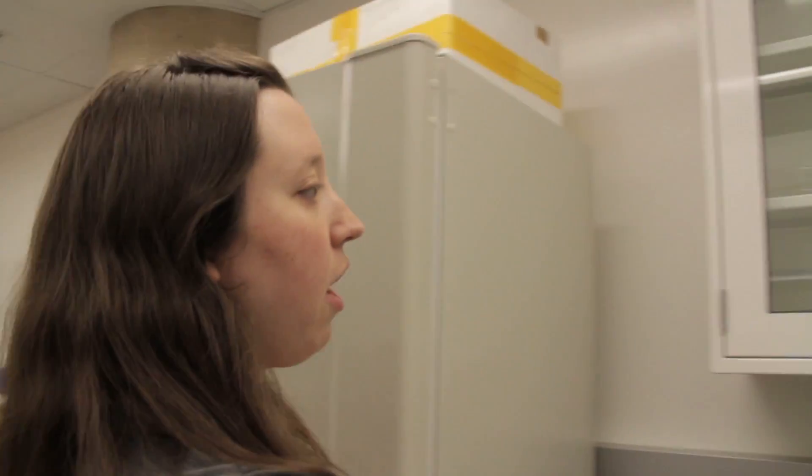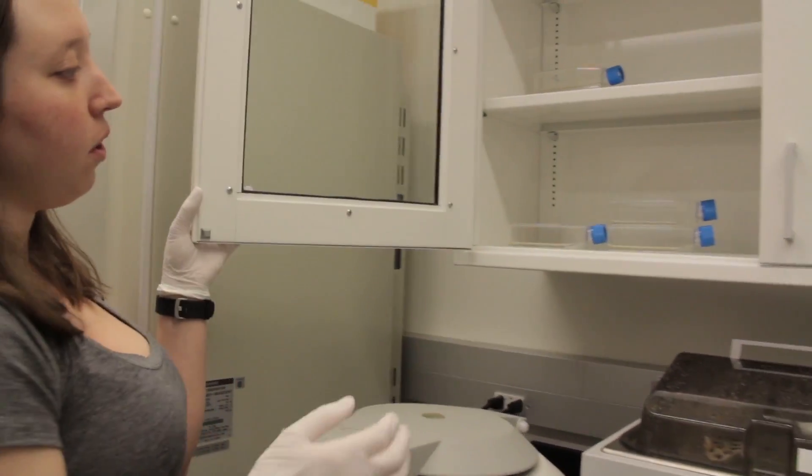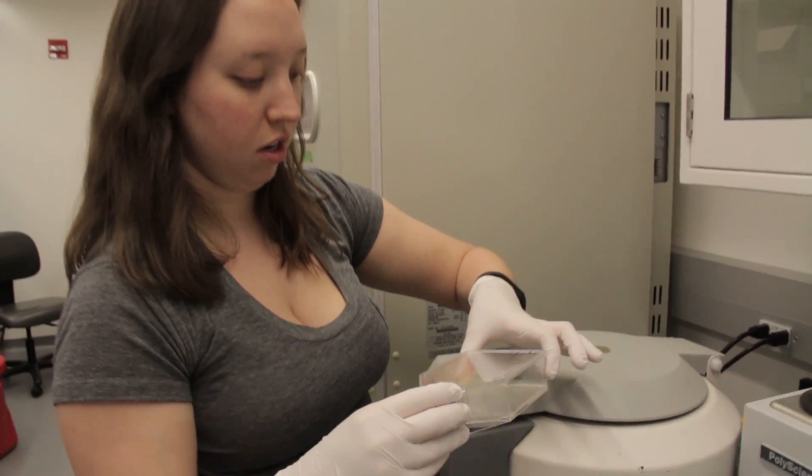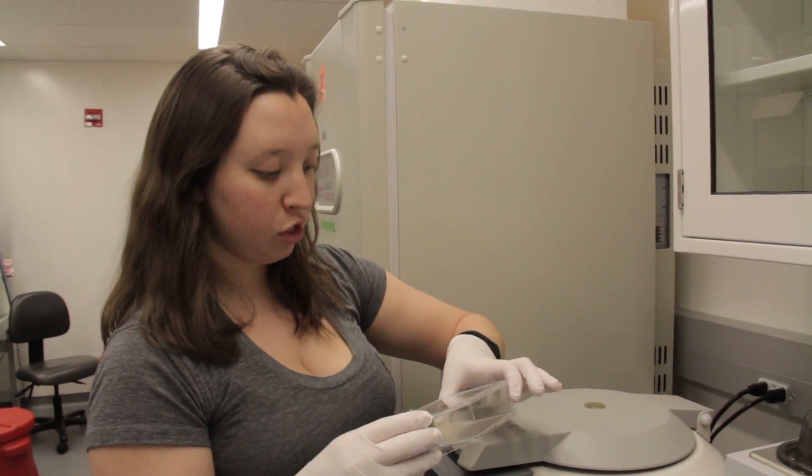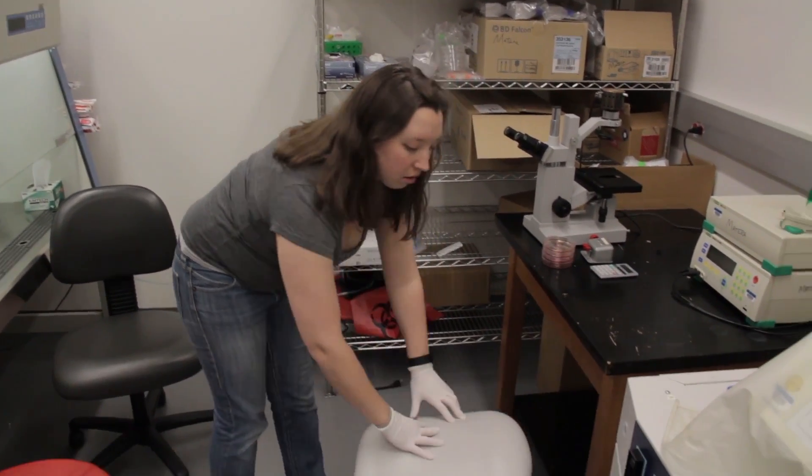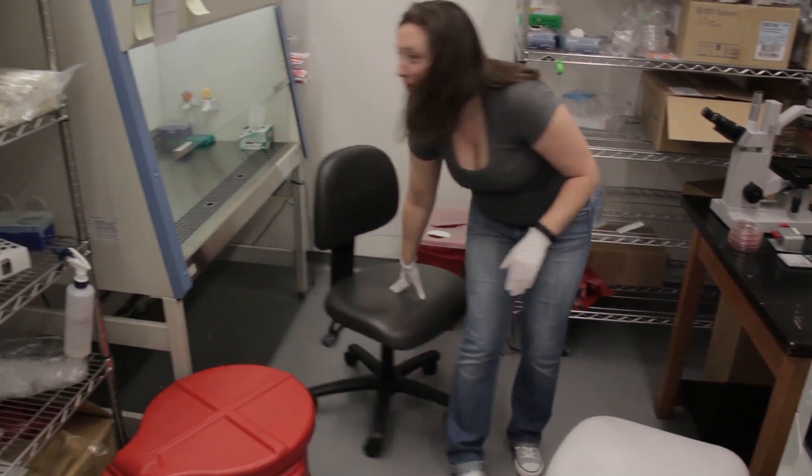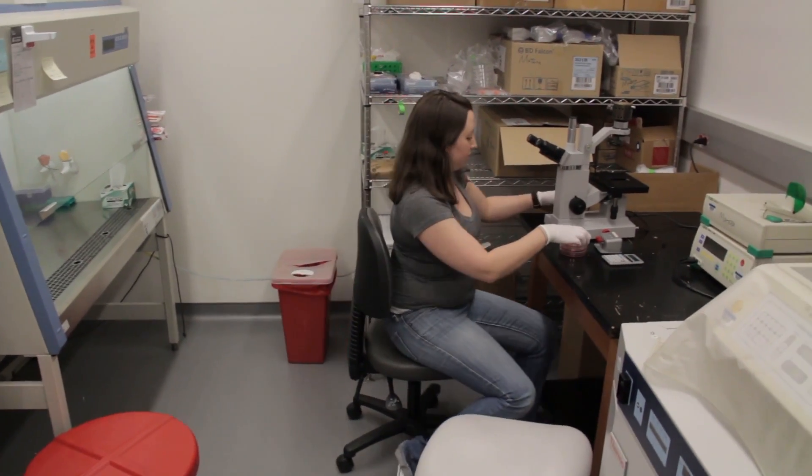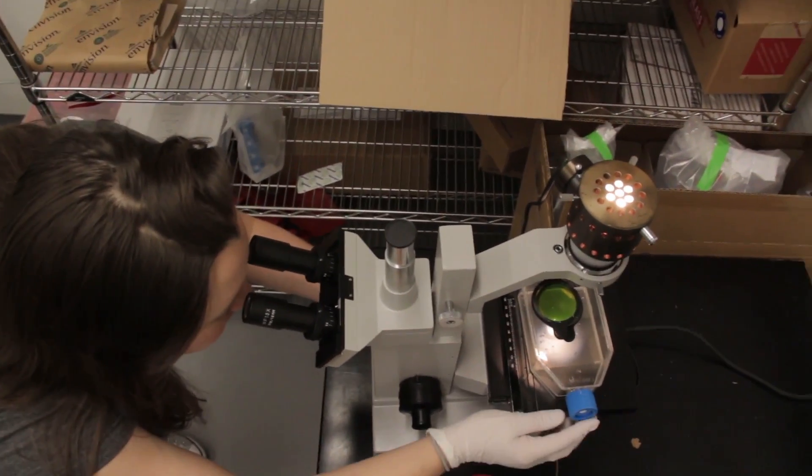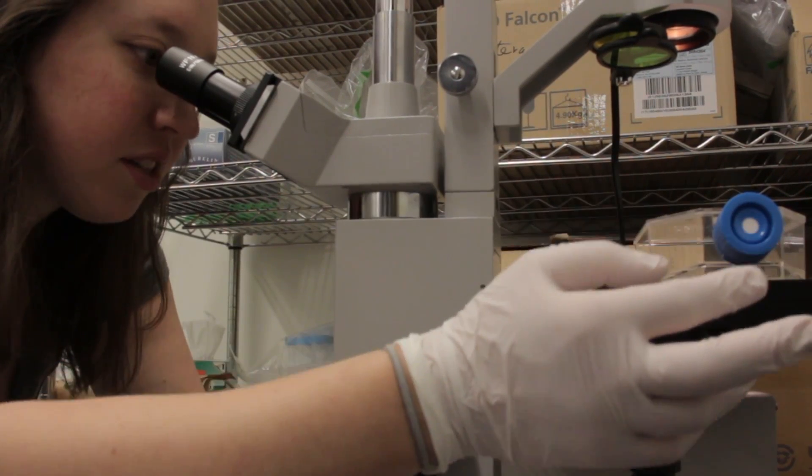I also grow fly cells—these are called S2 or Schneider 2 cells. They're nice and cloudy, which means lots of cells are growing. If I just give the flask a gentle tap, I can see lots and lots of cells.